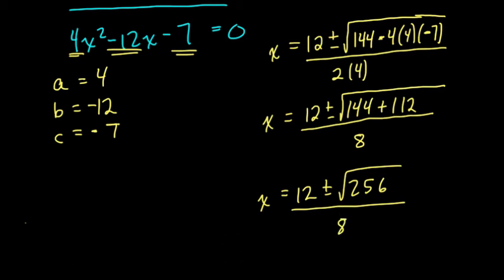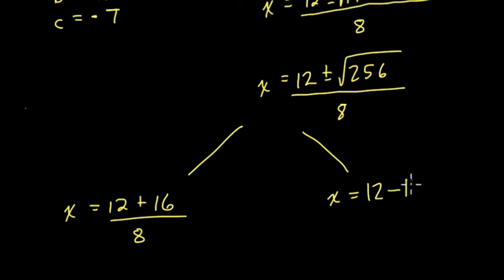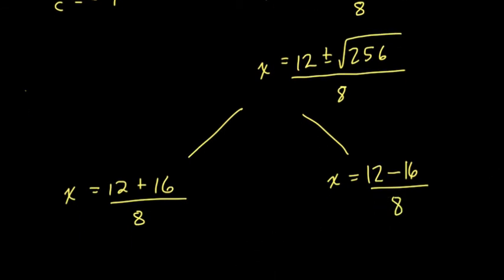And here we can start to split things up. So x is going to equal what? Well, 12 plus the square root of 256 is 16 all over 8. Or x could equal 12 minus 16 over 8. Because we have the plus or minus the positive or negative square root of 256.